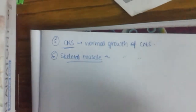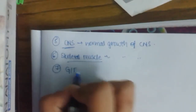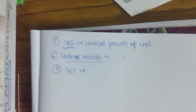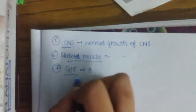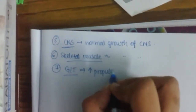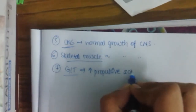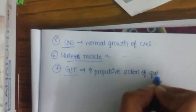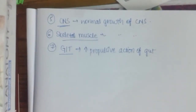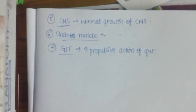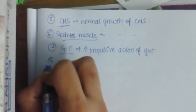The seventh action is on the GIT. Thyroid hormone increases the propulsive action of the gut. In hypothyroidism, the person will suffer from constipation, whereas a person with hyperthyroidism may suffer from diarrhea.